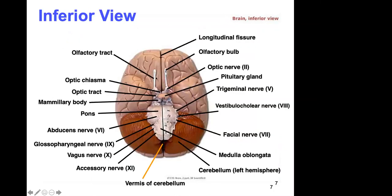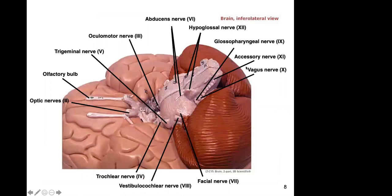Looking at some cranial nerves visible on the inferior view: cranial nerve one — the olfactory bulb and olfactory tract for the sense of smell. Cranial nerve two — the optic nerve for vision — and where they crisscross in the center is the optic chiasm. The pituitary gland is nearby; if it enlarges due to a tumor, it can put pressure on the optic nerve and interfere with vision.